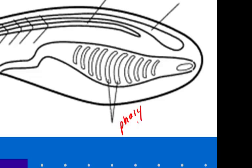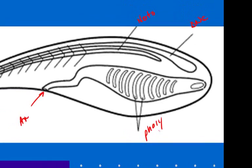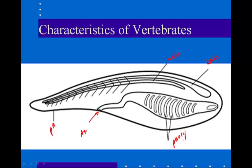Other features that are characteristic of vertebrates: we have internal organs, and we have more complicated internal organs. We're going to start to see kidneys and livers here. We're also going to see a heart with a closed circulatory system in all of our vertebrates.